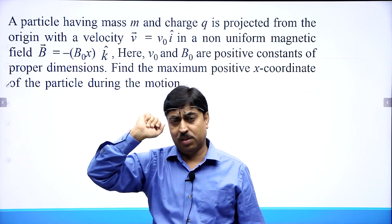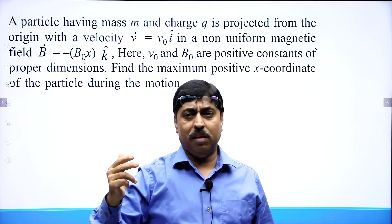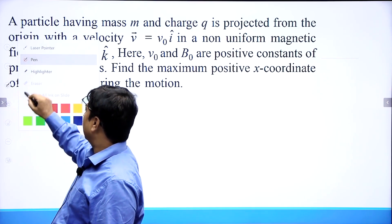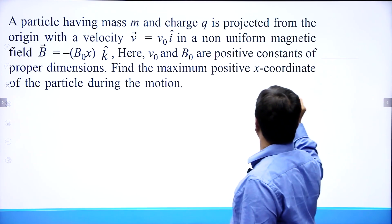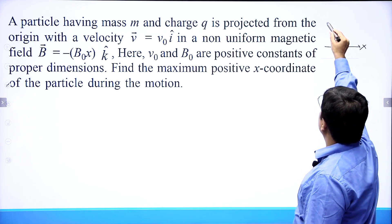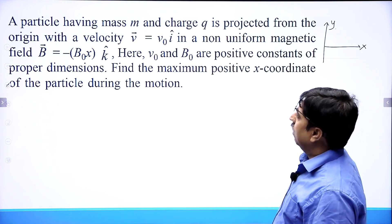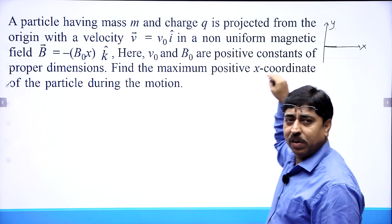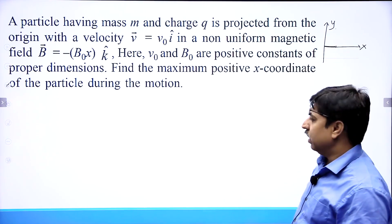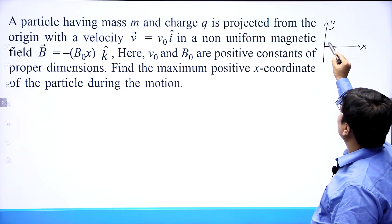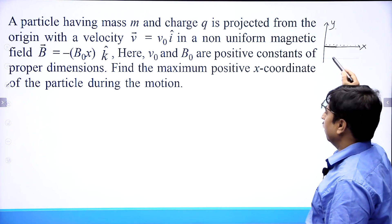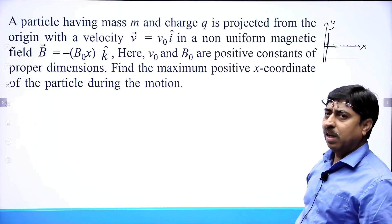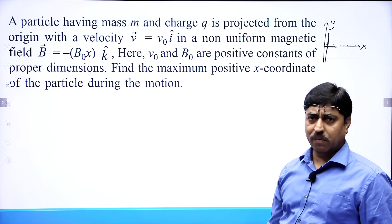The magnetic field is in the negative z direction — that is the first thing. The second thing is the strength of the magnetic field goes on increasing as the x coordinate goes on increasing. If I take this as the x axis and this as the y axis, the particle has been thrown in this way. The magnetic field is in the negative z direction, so it is inwards, but the magnetic field goes on increasing as you move along the x axis. On this particular line, if x is fixed, the magnetic field is fixed.